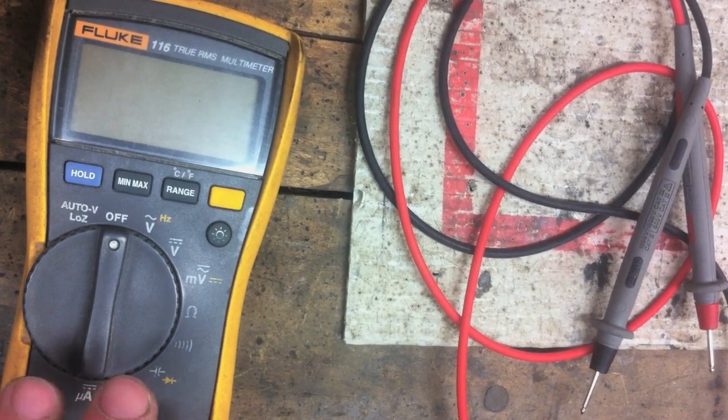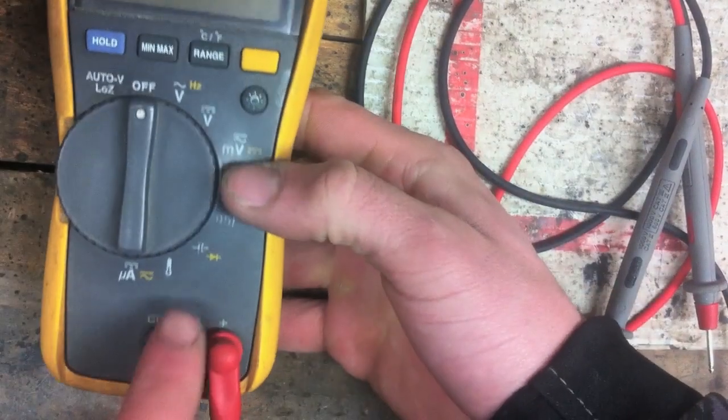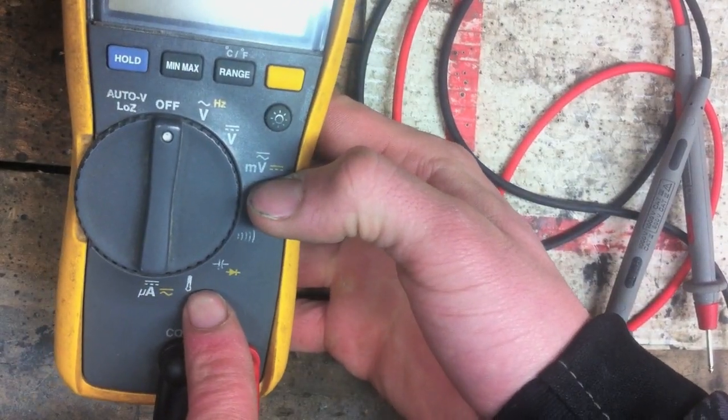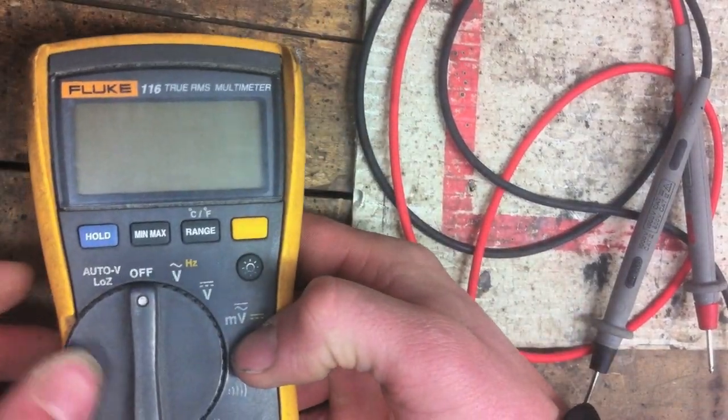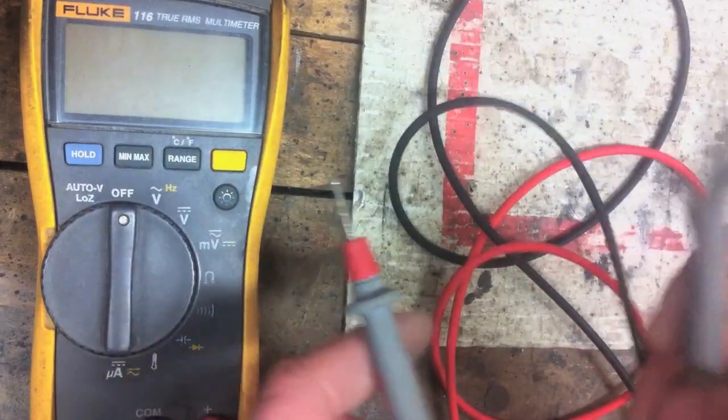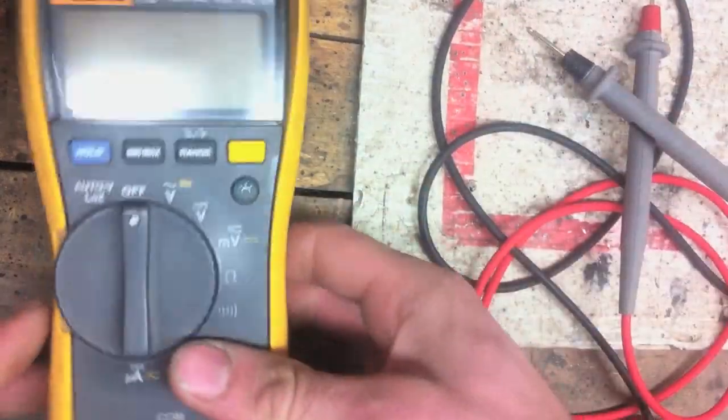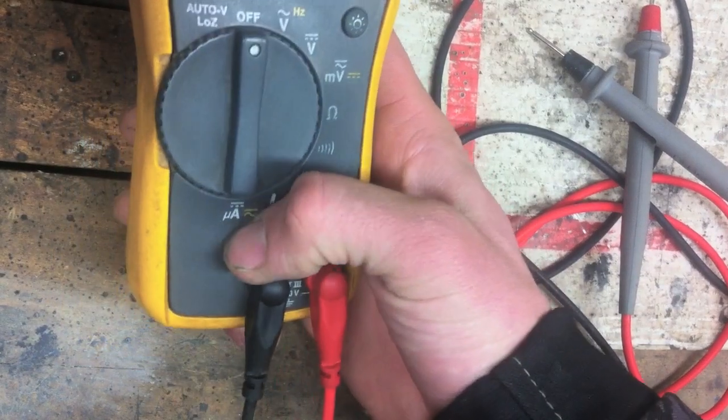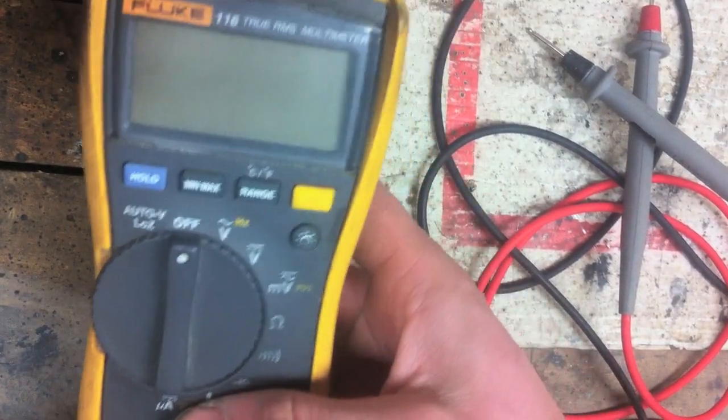If I were to buy another one, I'd probably go with the 117. Reason being is because the 117 doesn't have the temperature as an option, which I don't end up using anymore. But it will measure up to 10 amps in series. So if you wanted to measure current, it will measure up to 10 amps. Whereas this meter only measures micro amps. I think it's up to 10 micro amps or something. You'd have to read the manual.